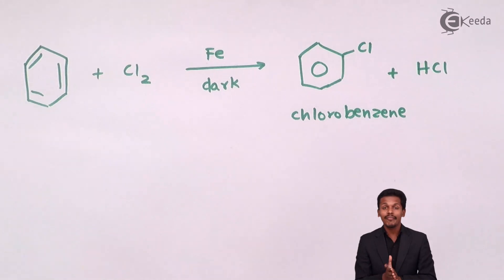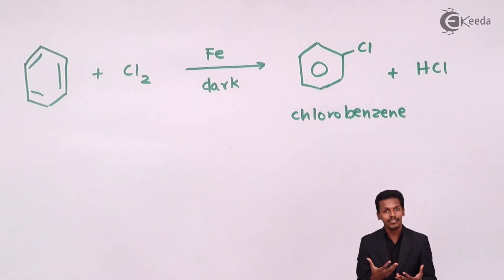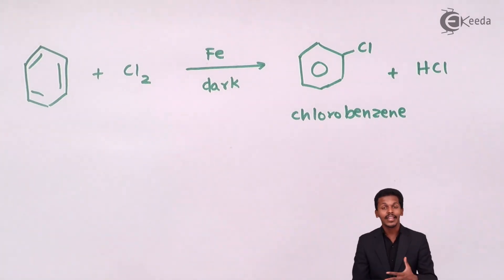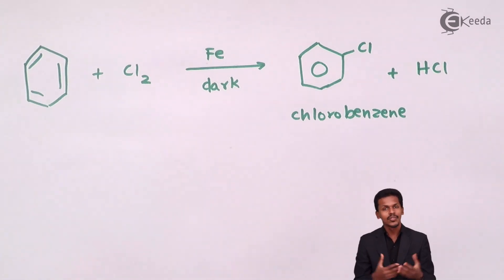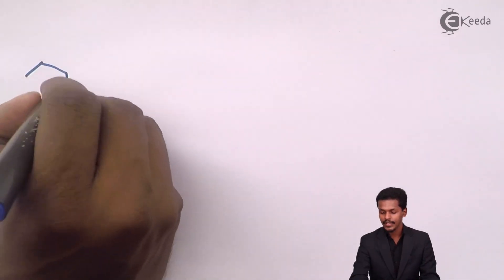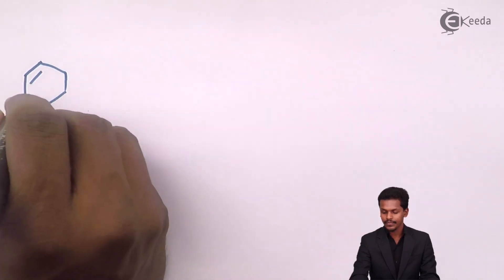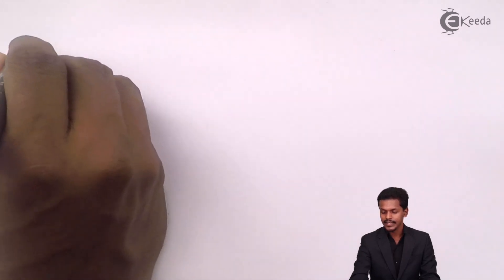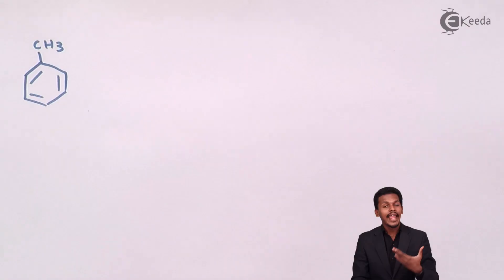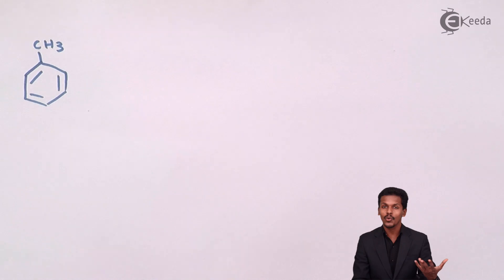Now, suppose we have a particular aromatic compound which also has a side chain with a substituent, and a substitution reaction undergoes on it. For example, consider toluene (with a CH₃ group), and we want to introduce chlorine using Cl₂ in the presence of Fe as a catalyst.